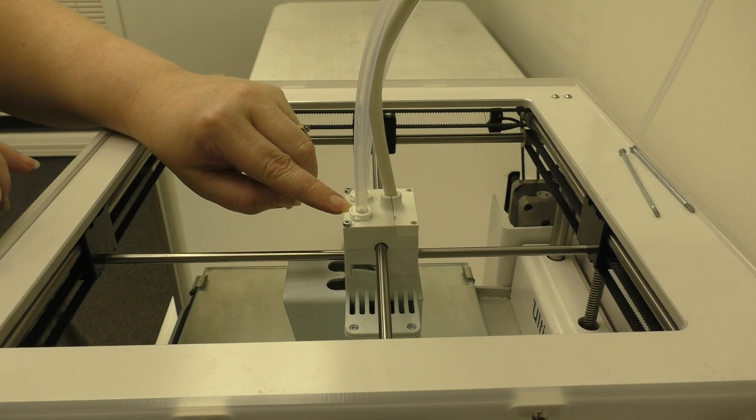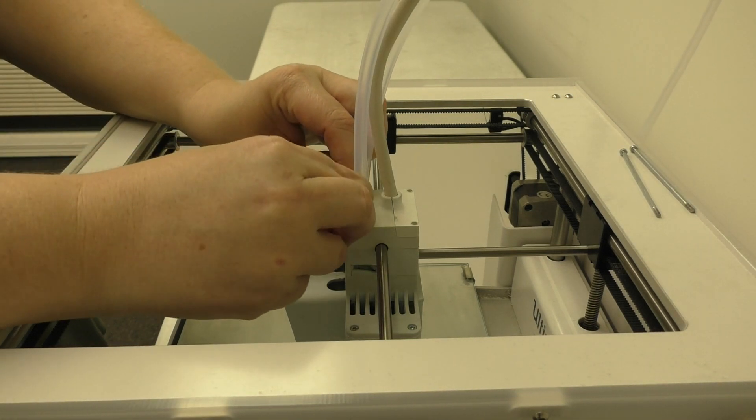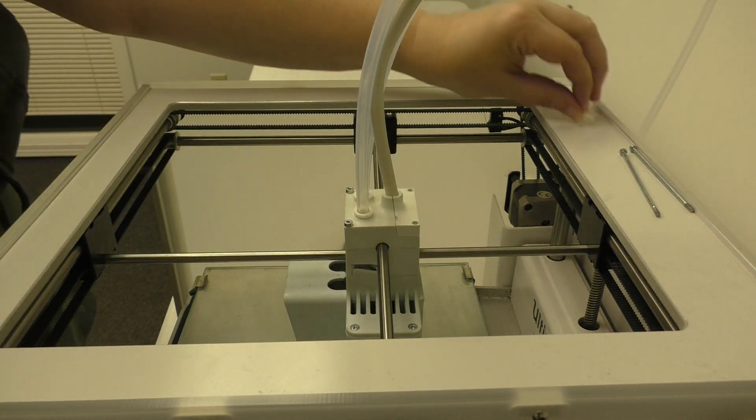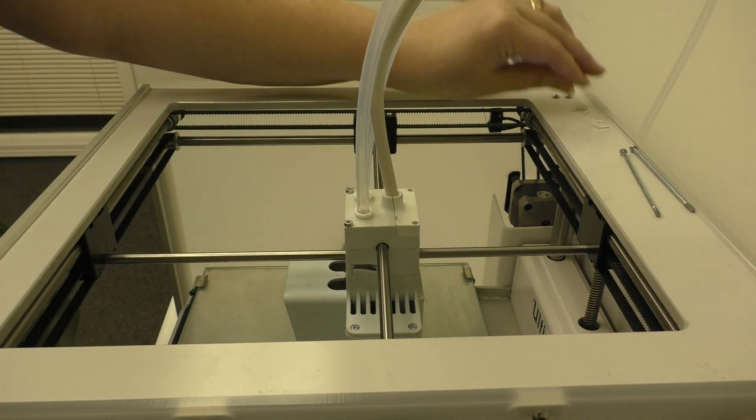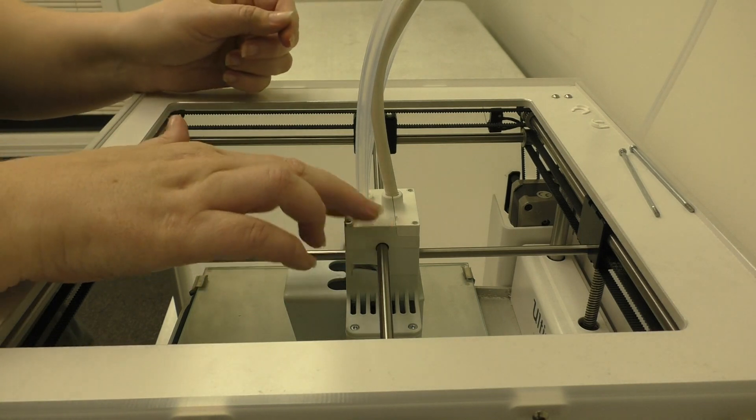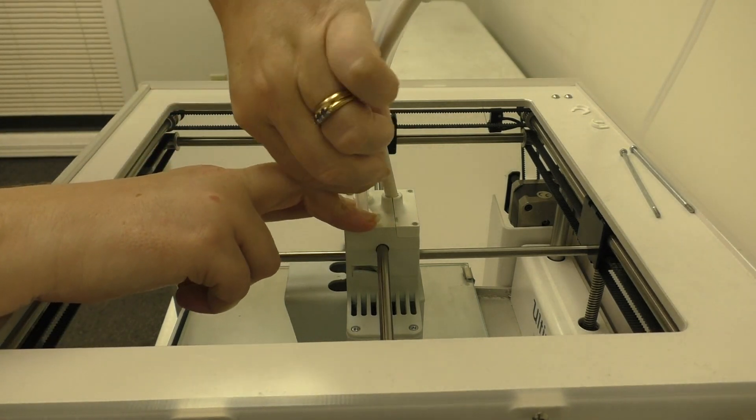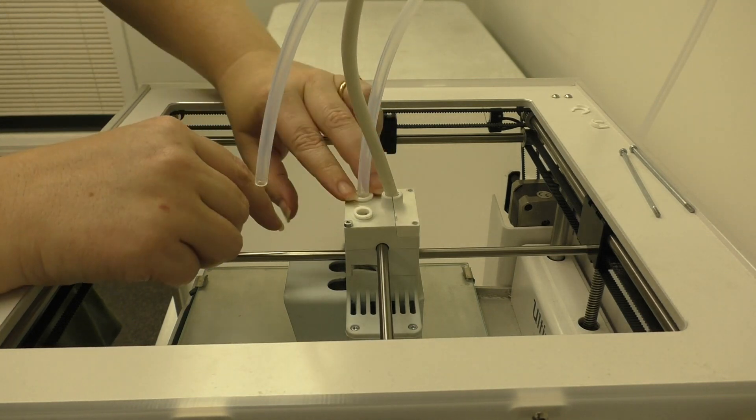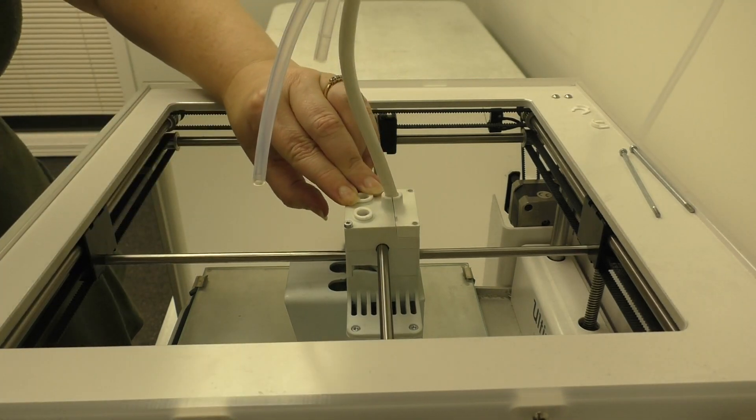Next, we're going to remove the clamp clips from underneath the collets. Just slide them forward. Be careful not to drop them. Now apply downward pressure to the collet and pull up on the Bowden tube. Do the same thing to the other Bowden tube. Downward pressure and up.